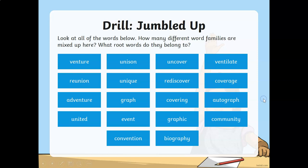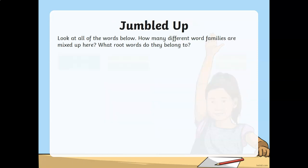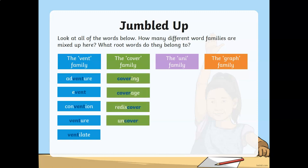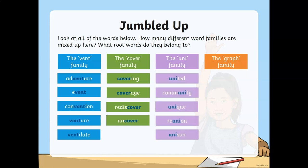All right, time is up. Let's reveal the answers. For the vent family, we got adventure, event, convention, venture, and ventilate. For the cover family, we got covering, coverage, rediscover, and uncover. And for the uni family, we have united, community, unique, reunion, and unison.